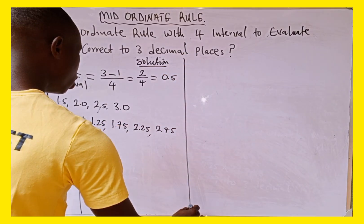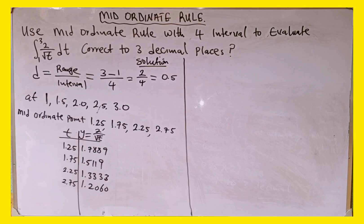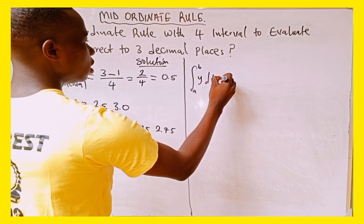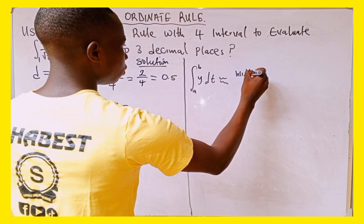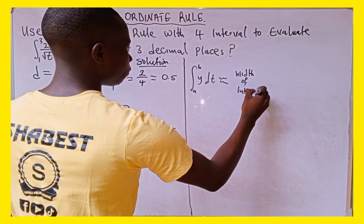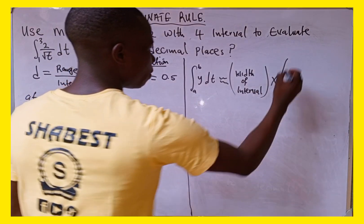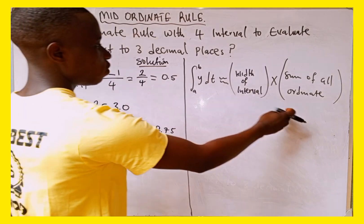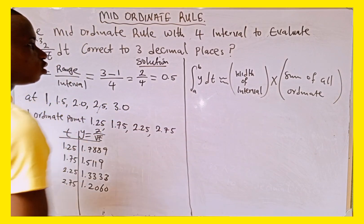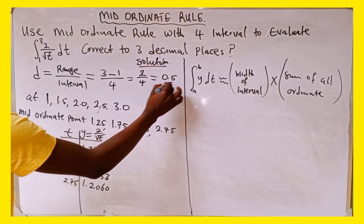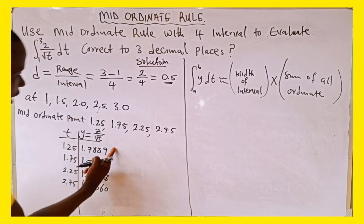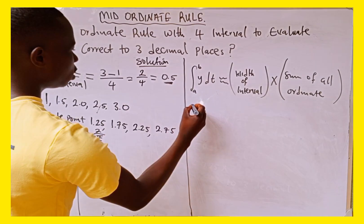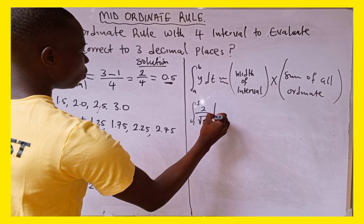The formula for the mid-ordinate rule is: the integral from a to b of f(t) dt is approximately equal to the width of the interval multiplied by the sum of all mid-ordinates. In our case, the integral from 1 to 3 of 2 over root t dt is approximately 0.5 times the sum of all mid-ordinates.